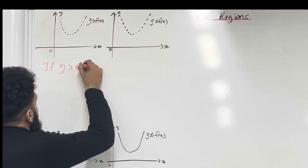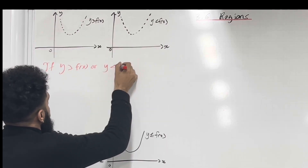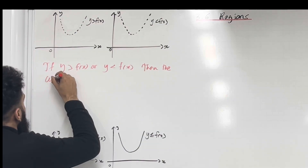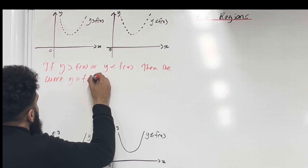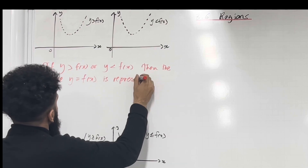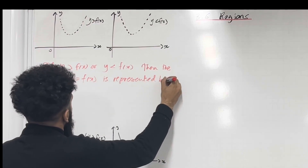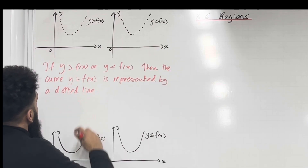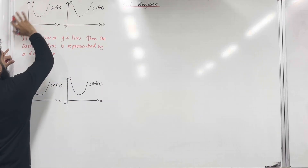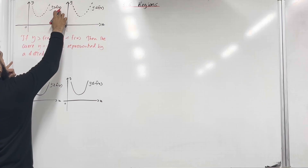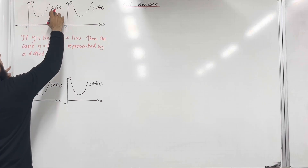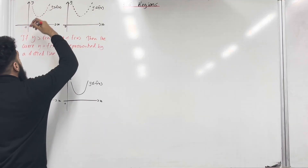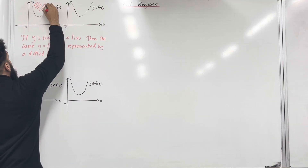If y is greater than f of x or y is less than f of x, then the curve y equal f of x is represented by a dotted line. So over here, I want to shade in y is greater than f of x. The curve is represented by a dotted line because equal is not included. We want greater than f of x, so that is above the curve — that's what we need to shade. So all of this part over here.